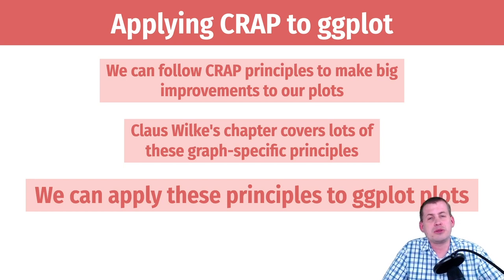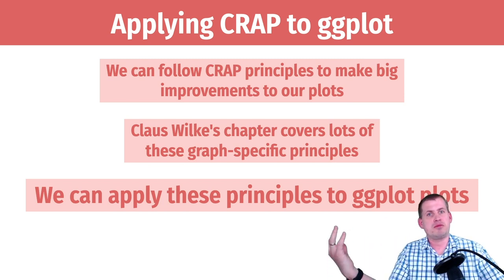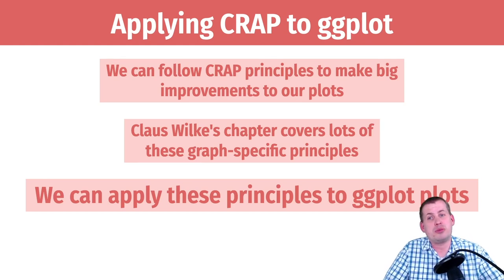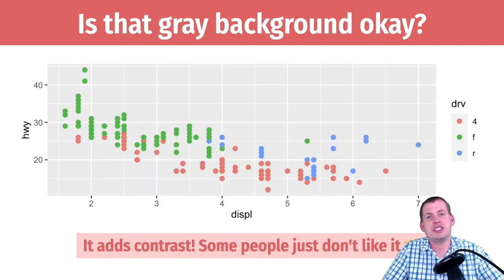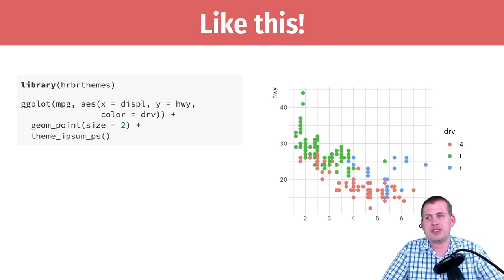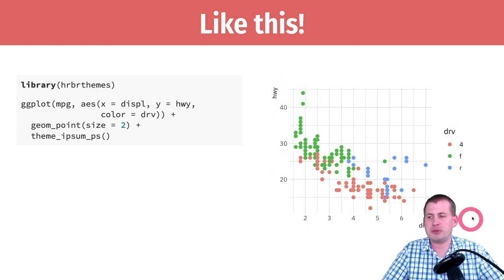We can apply contrast, repetition, alignment, and proximity principles to our graphs. The reason I had you look at Claus Wilke's chapter on plot titles and how to format tables and other things is because he outlines lots of different rules for creating good-looking graphics and applying core design principles to data graphics specifically. The easiest way to do that in ggplot is with themes. If you look back at that gray background standard ggplot plot, by adding just a single line of code — for example, theme_ipsum_ps from the hrbrthemes package — you can change all the fonts, remove some borders, and make your plot look a lot nicer.